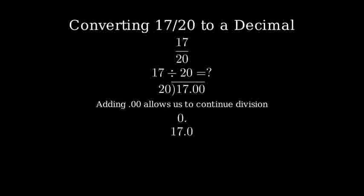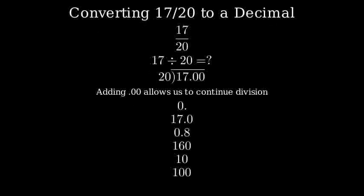Now we have 17.0. 20 goes into 170 eight times because 8 times 20 is 160. 160 subtracted from 170 leaves us with 10. Bringing down our last zero, we now have 100.